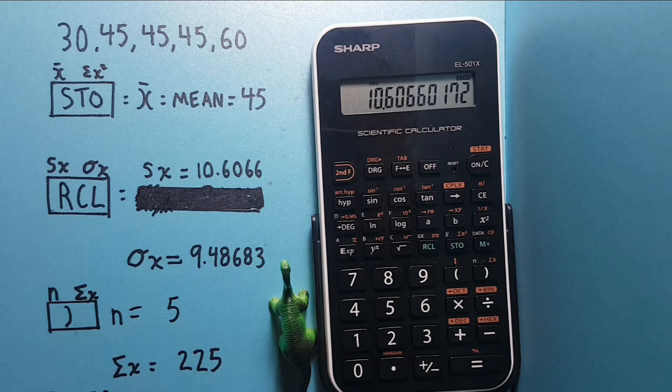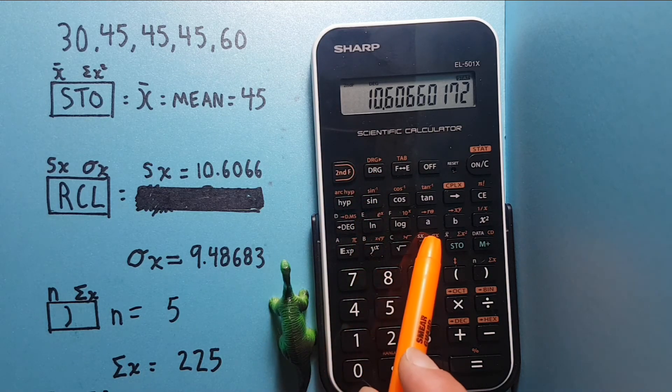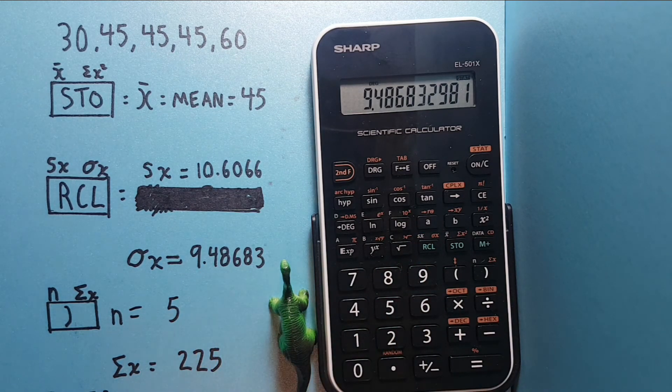If we want to get our population standard deviation, we would press second function, and then the same key, the RCL key. And we get our population standard deviation.